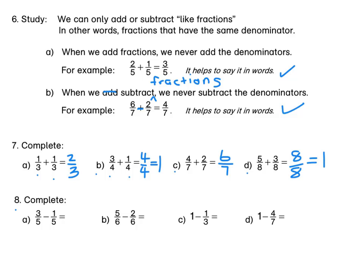Let's move on to 8. For A, we have 3 fifths minus 1 fifth equals 2 fifths. For B, 5 sixths minus 2 sixths is equal to 3 sixths. And 3 sixths in its simplest form is 1 half, if we divide the top and the bottom by 3.